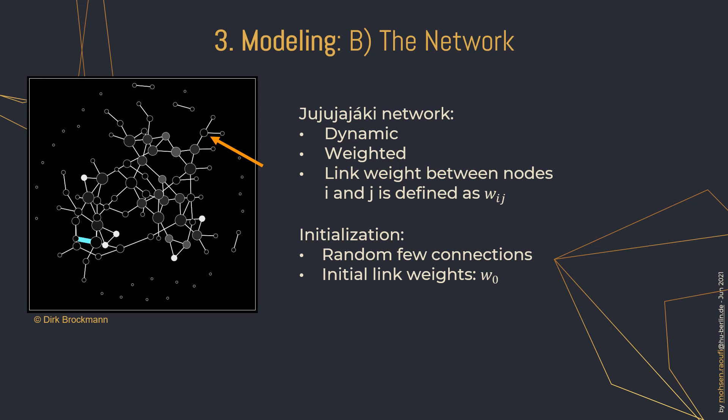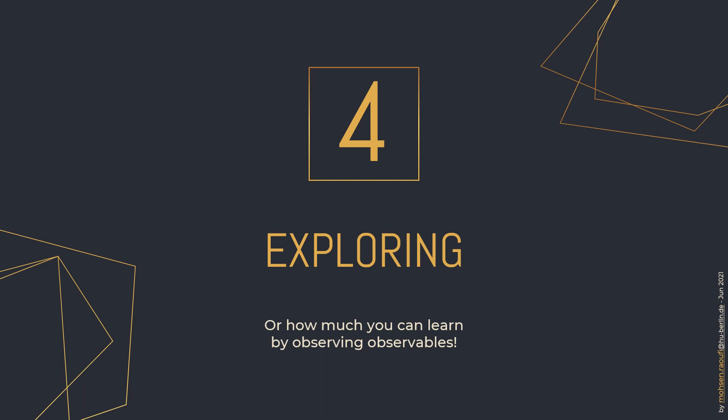For example, this node has a clustering coefficient of zero because none of its friends are friends of each other, whereas for these two nodes with degree two, the clustering coefficient is maximum and equals one. There are some other nodes with mediocre CC values. Now that we know about the model and what to expect from the system, let's play some simulations.